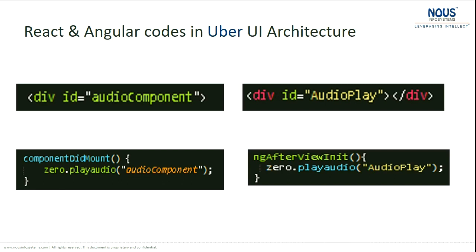For example, we implemented an audio component here. That audio component is interfaced by 'O' — the name of the module for the Uber UI architecture. So if you call O.playAudio, you just pass the ID of the audio and the default audio, and it will play the audio on the screen. I am not messing up my HTML, CSS, and JavaScript — this is very clear.